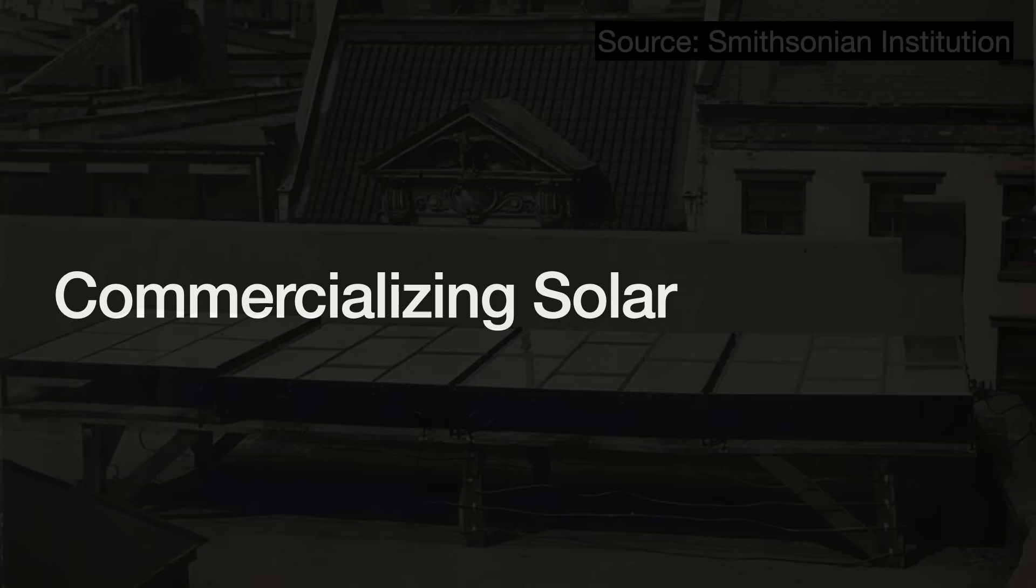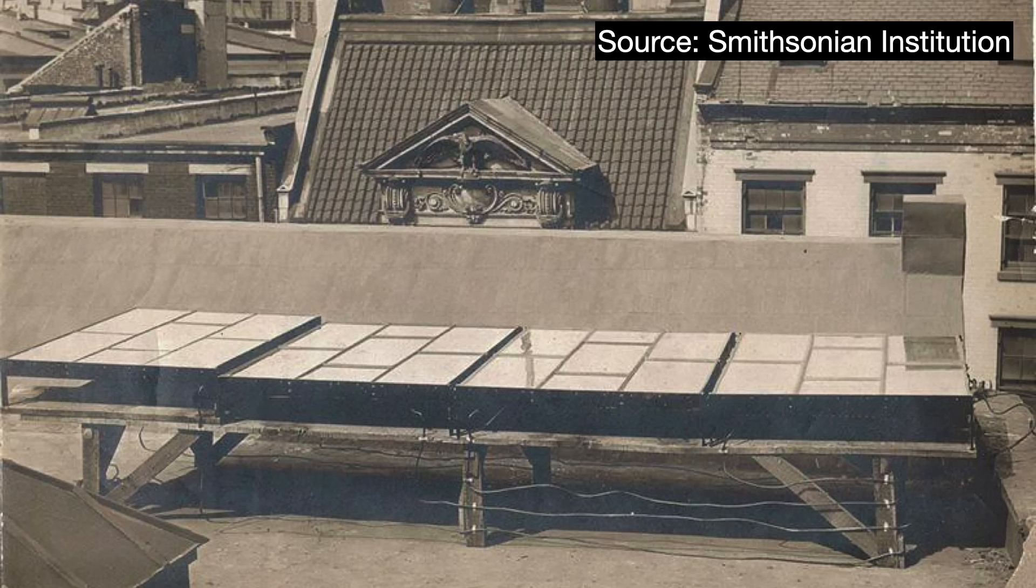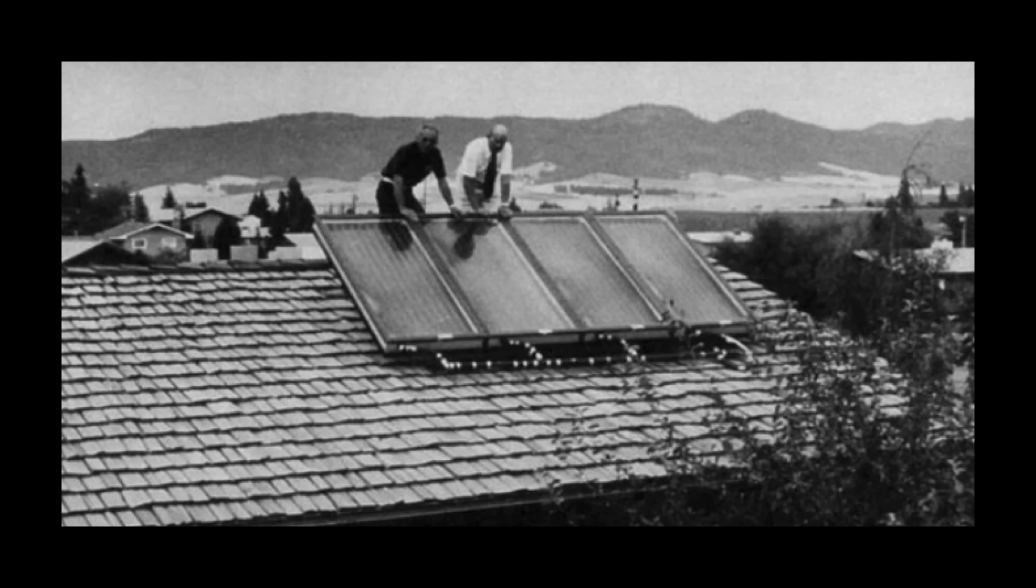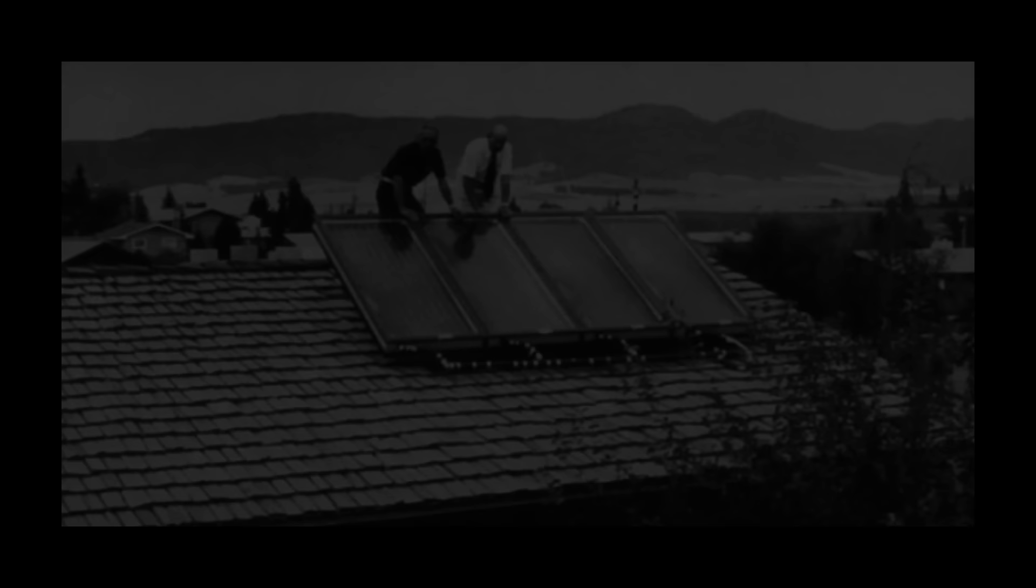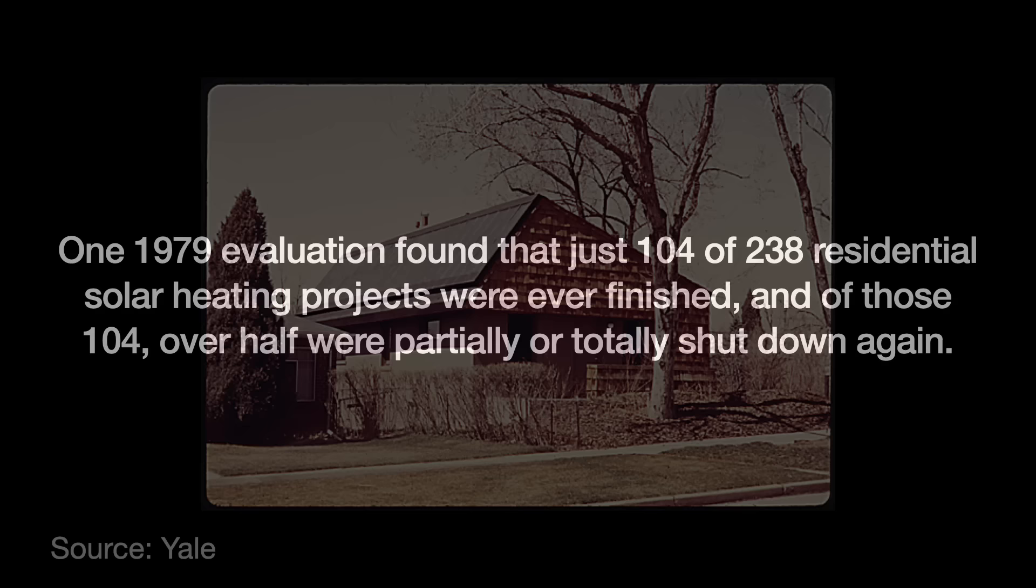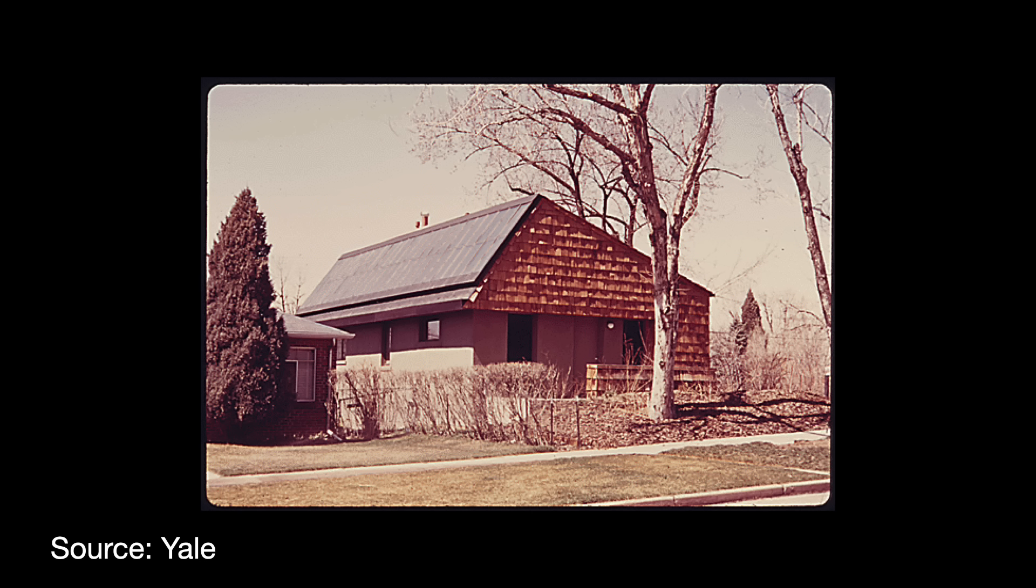The US Department of Energy only wanted to back solar technologies that were quote-unquote commercially ready. Photovoltaic cells was just one of three solar technologies they backed, the other two relating to solar heating. Solar heating had seemed promising. Advocates assured the government that the technology was basically ready. Nobody said otherwise and so they went ahead with the incentives. But evaluations later found substantial technical failures and disappointments. One 1979 evaluation found that just 104 of 238 residential solar heating projects were ever finished. And of those 104, over half were partially or totally shut down again. The report concluded that there were gross inadequacies in the system. And by the time Reagan took office in 1980, the industry was almost entirely propped up by government incentives. Reagan probably did everyone a favor here by shutting it down.